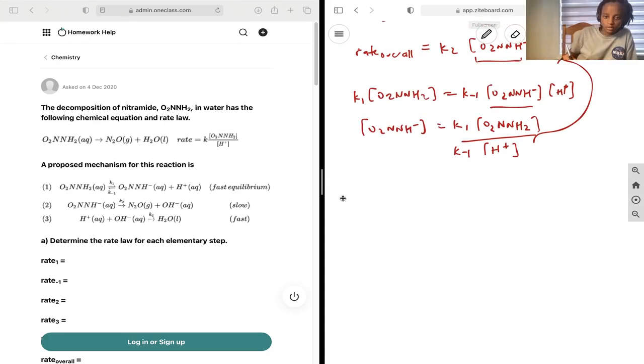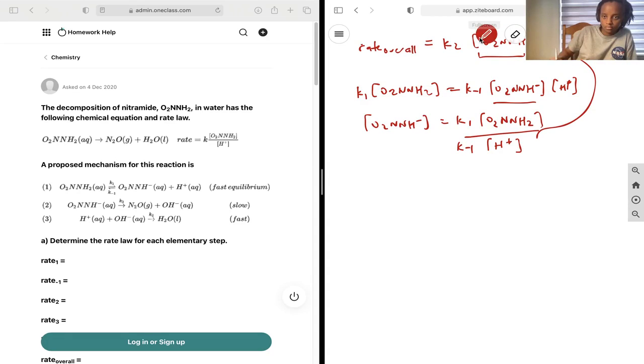Rate overall equals k2 O2NNH2 over k minus 1 H plus.